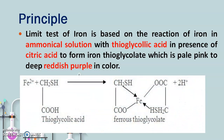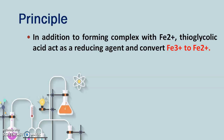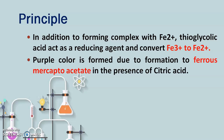In the reaction, Fe²⁺ (ferrous iron) reacts with thioglycolic acid to form a complex — ferrous thioglycolic acid or ferrous mercaptoacid — which gives a reddish-purple color in the presence of ammonia solution. In addition, thioglycolic acid acts as a reducing agent and converts ferric iron (Fe³⁺) to ferrous iron (Fe²⁺), and the purple color is actually formed due to the presence of ferrous mercaptoacid.